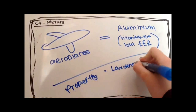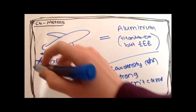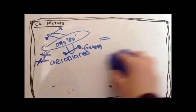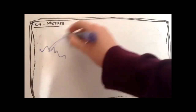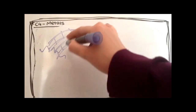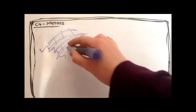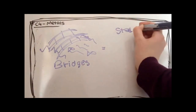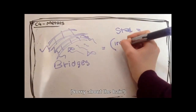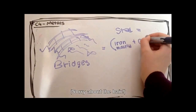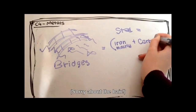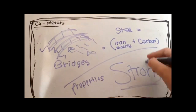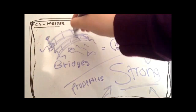Aeroplanes are made of aluminium, but also titanium, though that's very expensive. It has properties of low density, is strong and doesn't corrode. Finally, bridges are made of steel, which is mostly iron but has a little bit of carbon in it, which makes it a lot less brittle. It's made of steel because it's so strong. And that is metals.